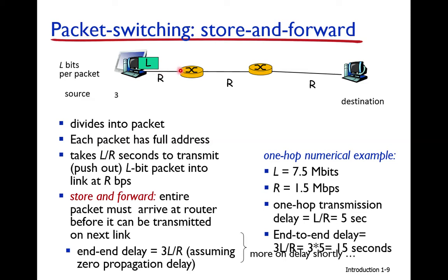When the data comes on the link, it is moved to the routers. When the router receives the data bits, it stores the bits until the whole packet has arrived. This is called store-and-forward. From the first link, it took 5 seconds.